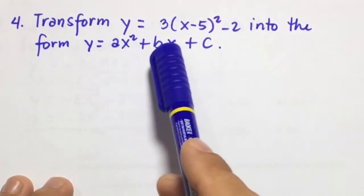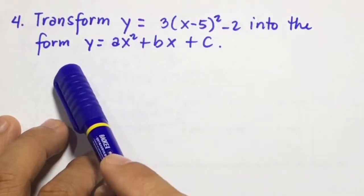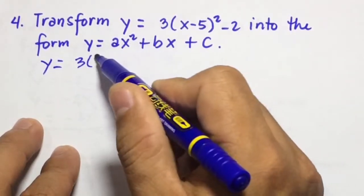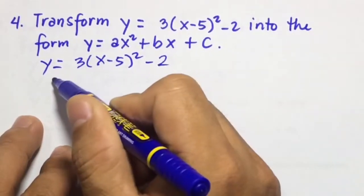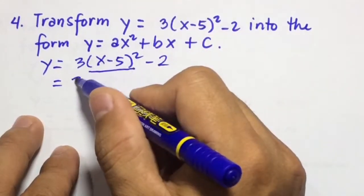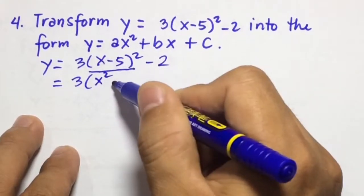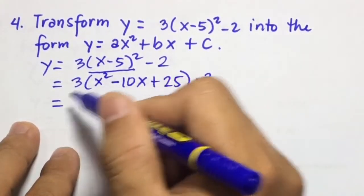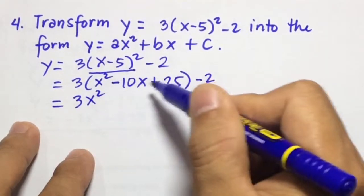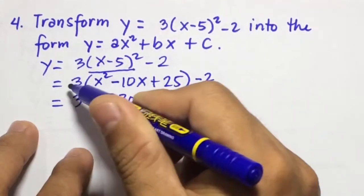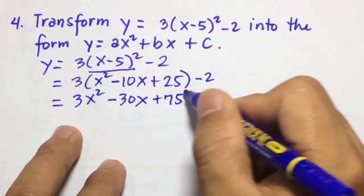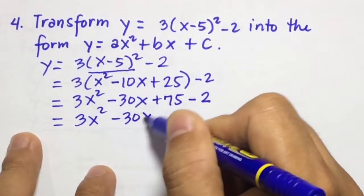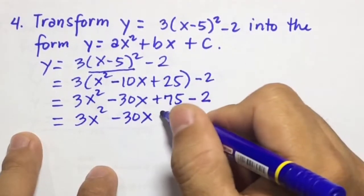Number 4: transform y equals 3 times the quantity of x minus 5 squared minus 2 into the form y equals ax squared plus bx plus c. So we write first y equals 3 times the quantity of x minus 5 squared minus 2. Then we operate x minus 5 squared first: 3 times the quantity of x squared minus 10x plus 25, then minus 2. Multiplying: 3x squared, then 3 times negative 10x is negative 30x, 3 times 25 is 75, then minus 2. So 3x squared minus 30x, then 75 minus 2 is 73, so plus 73.